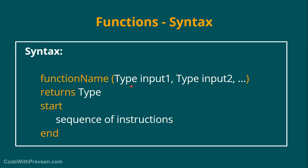It can be any type as per your requirement. For example, in case of calculating age, it can be the date of birth as the variable and the type can be a string. It can repeat any number of times, or in fact a function can even have no arguments at all. Then it is followed by the 'returns' keyword where we mention the return type of the function, and the actual sequence of instructions are captured between the start and end keywords.